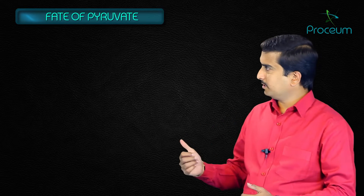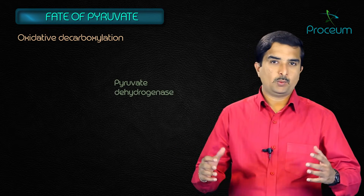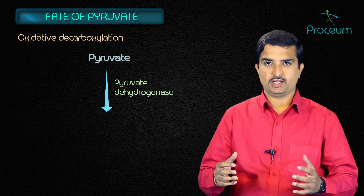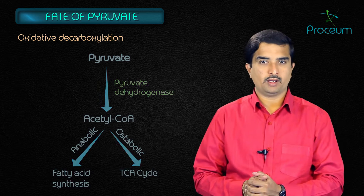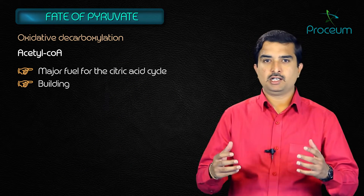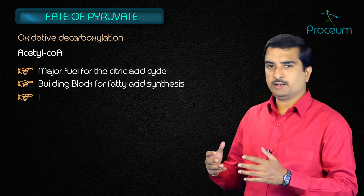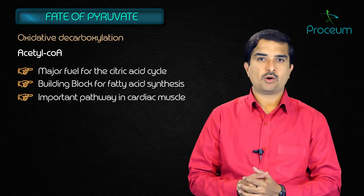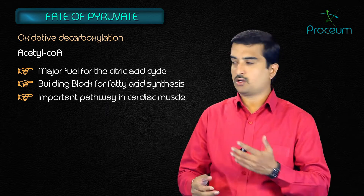The first fate is oxidative decarboxylation. The pyruvate dehydrogenase enzyme irreversibly converts pyruvate, the end product of glycolysis, into acetyl-CoA, which is a major fuel for the citric acid cycle and the building block for fatty acid synthesis. This is an important pathway in tissues with high oxidative capacity, such as cardiac muscle.